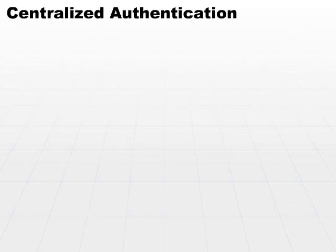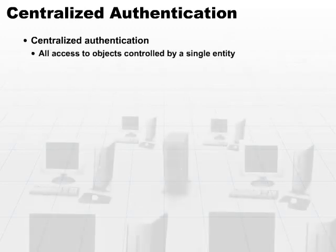First off, let's look at the oldest and sometimes the most secure location for placing our controls, and that's using a centralized authentication mechanism. Centralized authentication means that we're placing all of our controls in a single entity or at a single entity location, and those controls will control access to all of the objects.